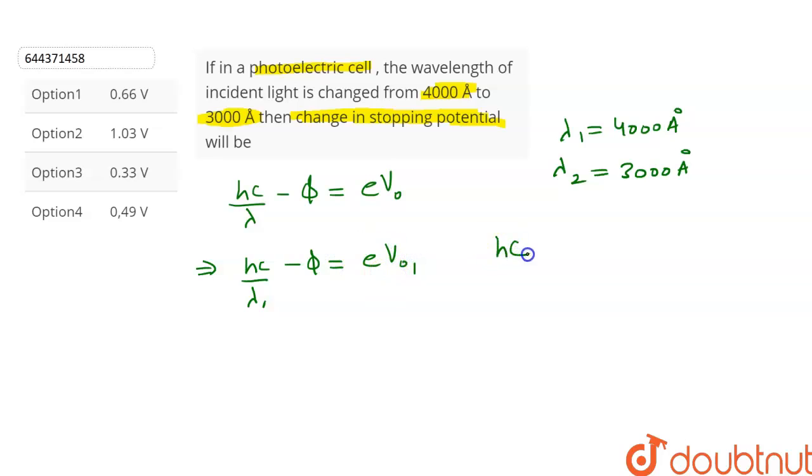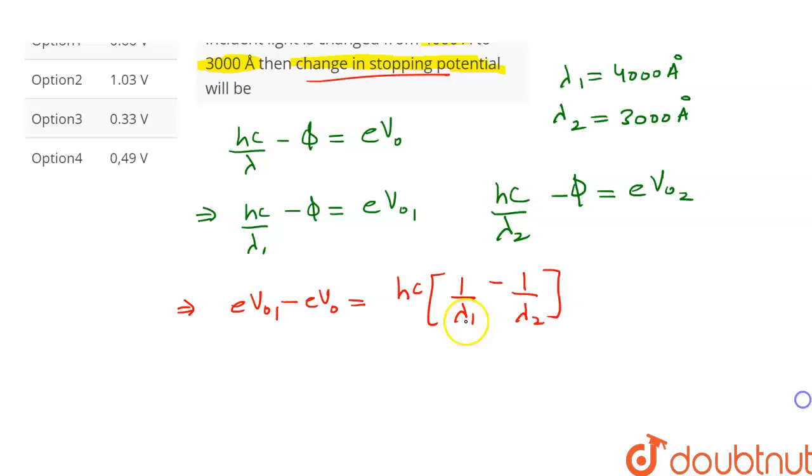So we can write hc by lambda 1 minus phi is equal to eV0_1, and hc by lambda 2 minus phi is equal to eV0_2. The work function of the metal will not change. Now let's subtract these two equations. This will give us eV0_1 minus eV0_2 is equal to hc into 1 upon lambda 1 minus 1 upon lambda 2.